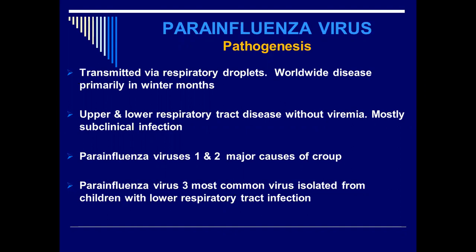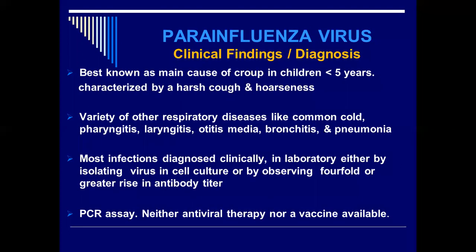Parainfluenza virus type 3 is the most common virus isolated from children with lower respiratory tract infection. Mostly the disease occurs in children, and almost all children have been exposed to the parainfluenza virus. Types 1 and 2 are concerned with the main disease, whereas type 3 causes subclinical infection in children.